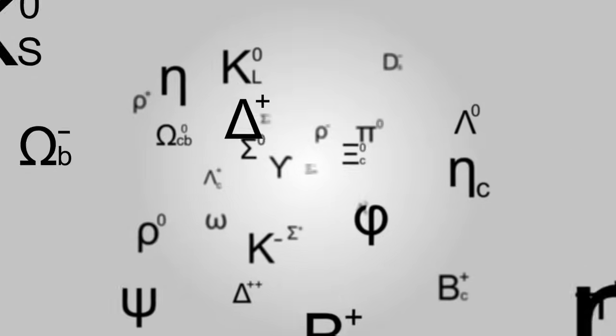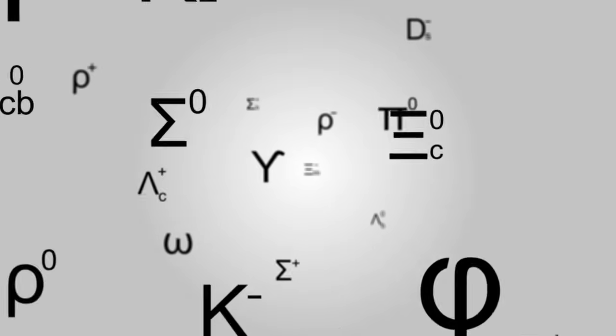There wasn't really a system established to organize this zoo of particles. We were calling these new particles things like pi, sigma, delta and so on, and things got so bad we were running out of symbols to name these particles.